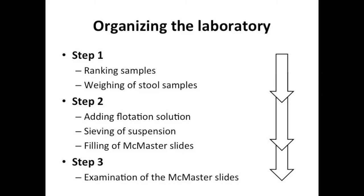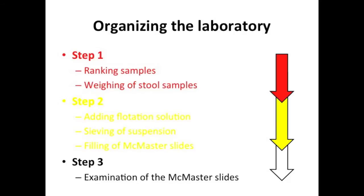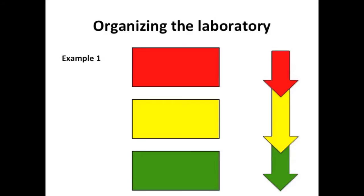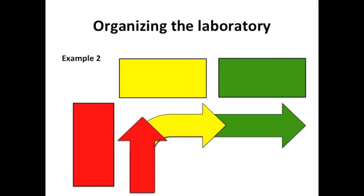We will now illustrate two possible setups for this procedure using a specific color code. Step 1 is indicated in red, step 2 is indicated in yellow and step 3 is indicated in green. In the first example, the tables are organized in one line. In the second example, the tables are placed in an L shape. This is the example that we will discuss in detail in the following section.